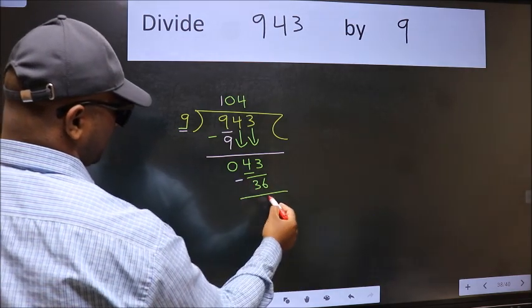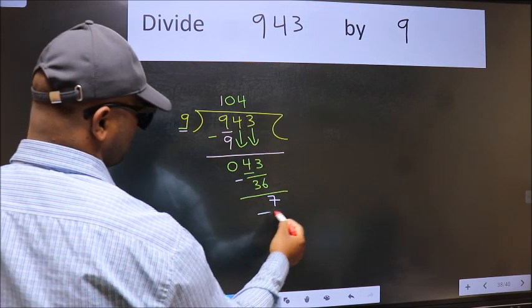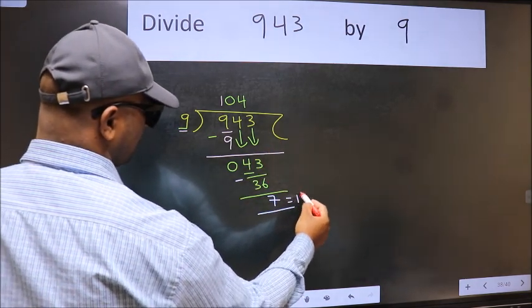No more numbers to bring down, so we stop here. This is our remainder, and this is our quotient.